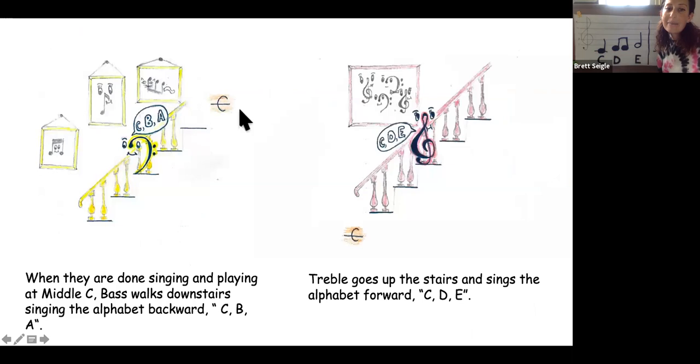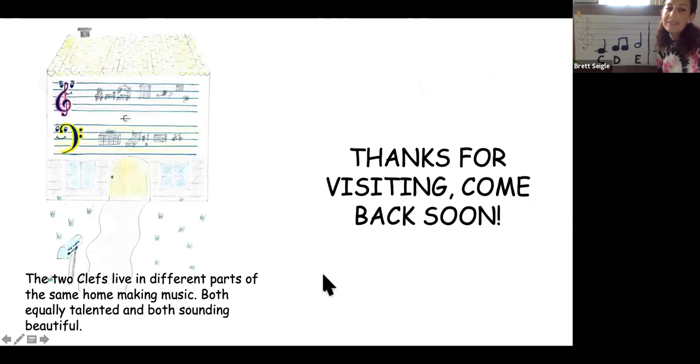They will sometimes meet in the middle to sing and play music. When they are done singing and playing at middle C, Bass walks downstairs singing the alphabet backwards. C-B-A. Treble goes up the stairs and sings the alphabet forward. C-D-E. The two clefs live in different parts of the same home making music, both equally talented and both sounding beautiful. Thanks for visiting. Come back soon.